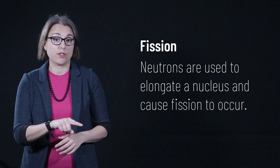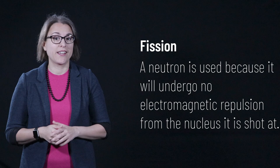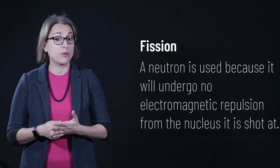Usually, the fission process is started by shooting a neutron at an atom to cause the elongation. Why is a neutron used instead of a proton? The neutron, being neutral, will not undergo any electromagnetic repulsion forces that would cause it to deflect away from an atomic nucleus.